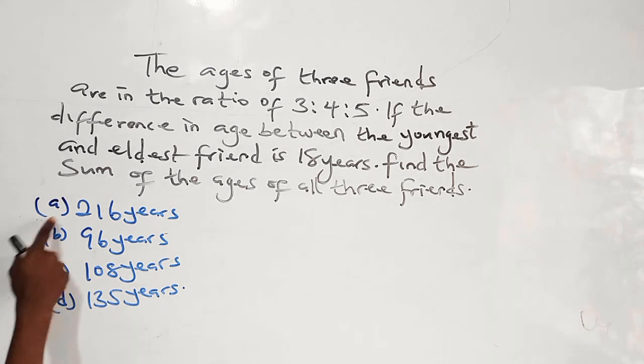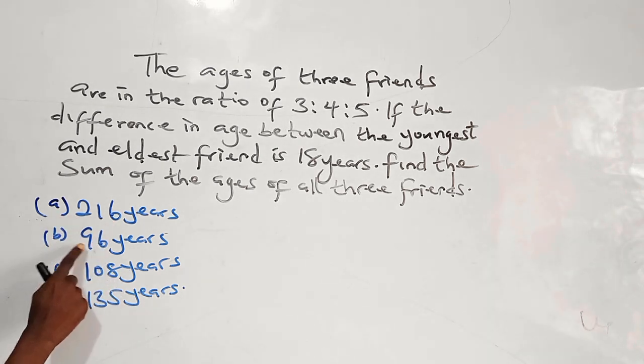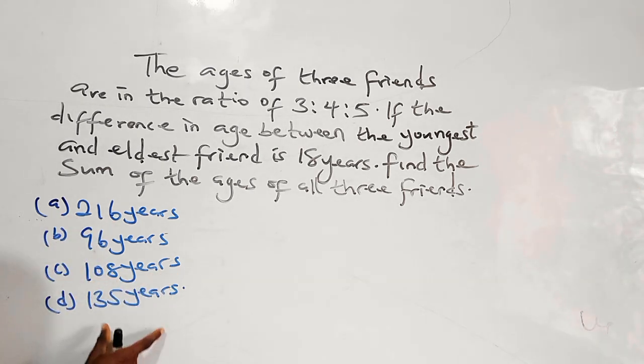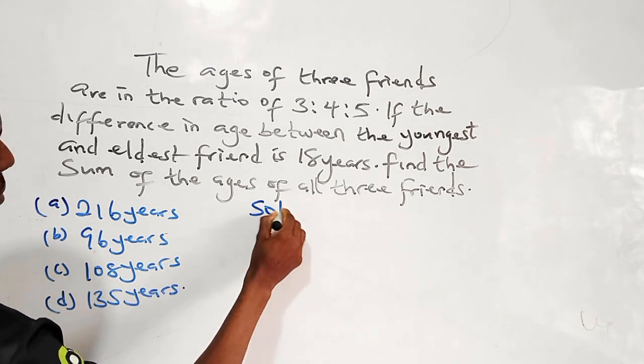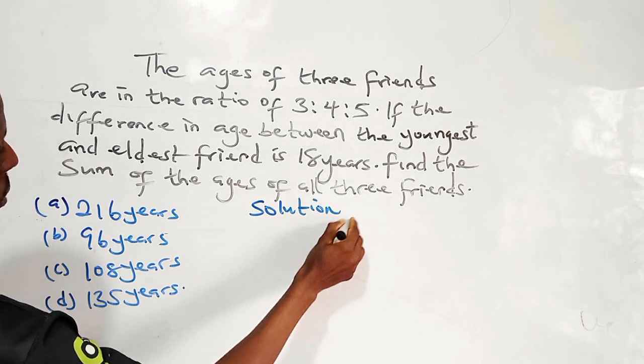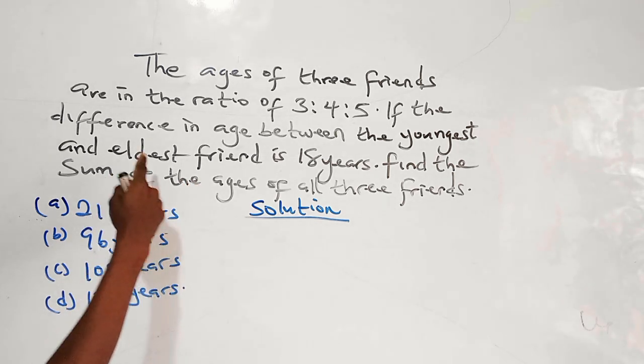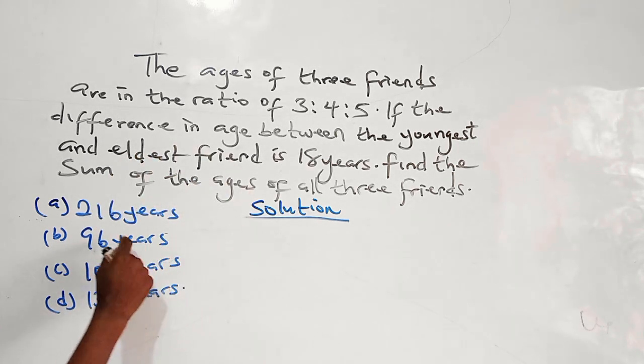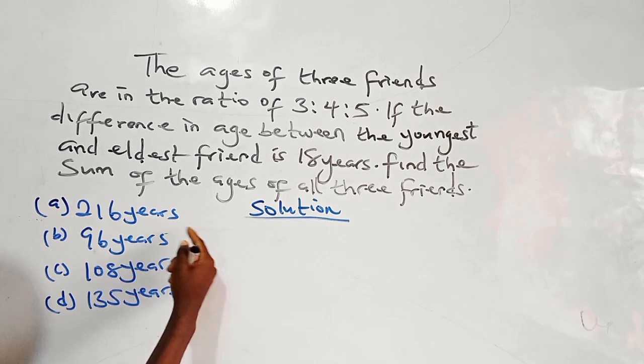And we are giving four options. The first one is 216 years, 96 years, 228 years and 235 years. We have to pick one solution. So when we look at this question, it's about ratio and we have to determine the ages.